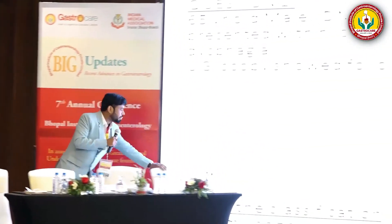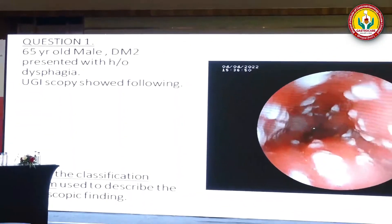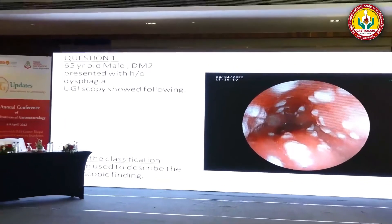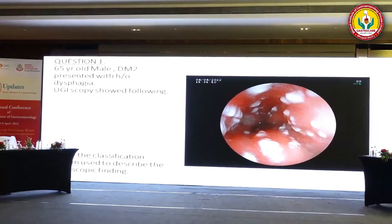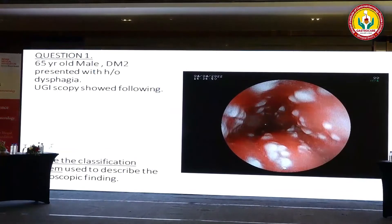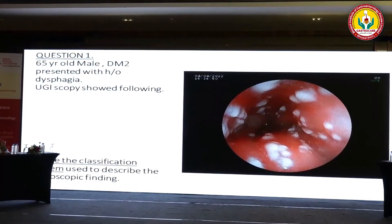The first question: a 65-year-old male diabetic presenting with history of dysphagia — this is the endoscopy image. The question is: name the classification system used to describe the endoscopy finding. There is no negative marking; one positive mark for each correct answer. Total time is 60 seconds — one minute — after that the question changes.